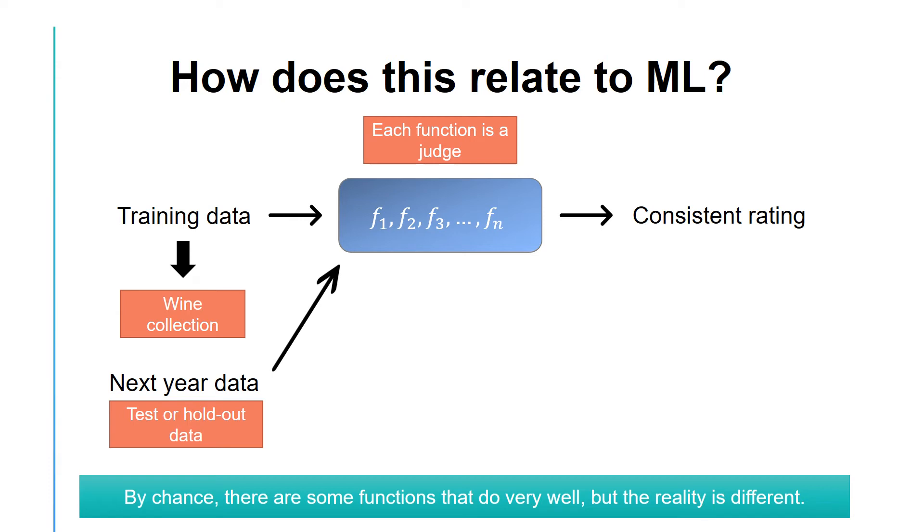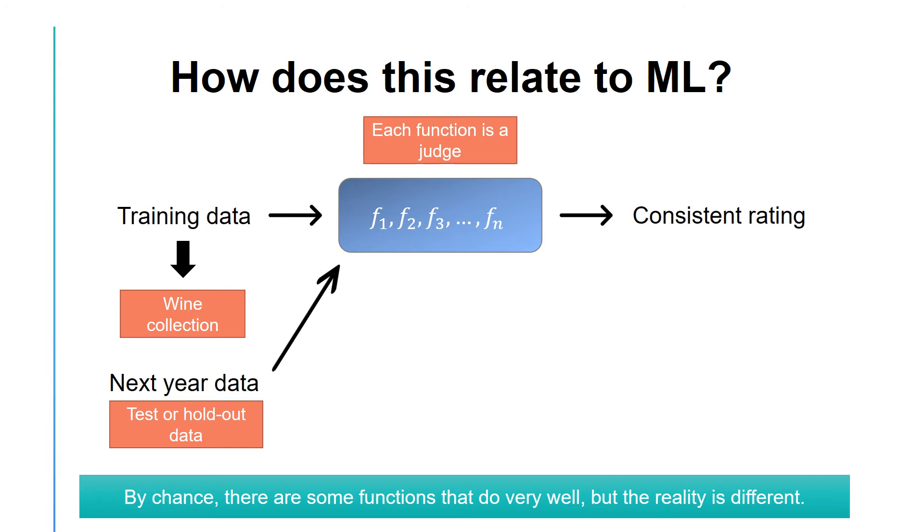The 15% of judges who performed well in the train set did not necessarily do well in the test set. This means the generalization performance was poor, making it very unlikely that the selected judges are really consistent all the time. This can be used to understand the idea behind overfitting.